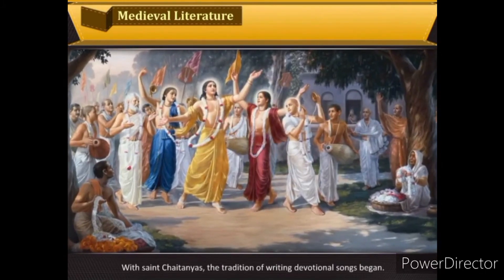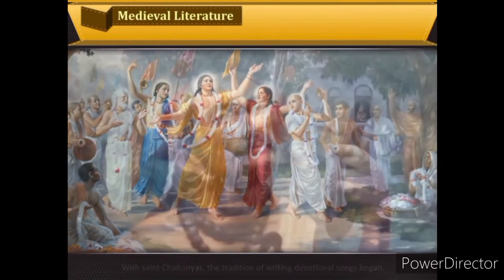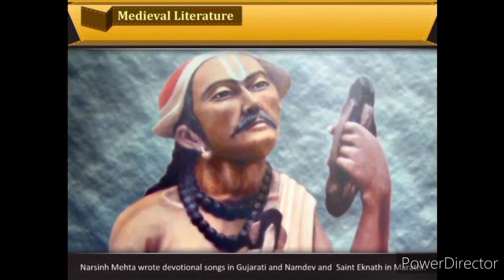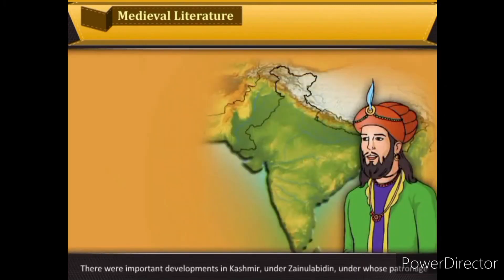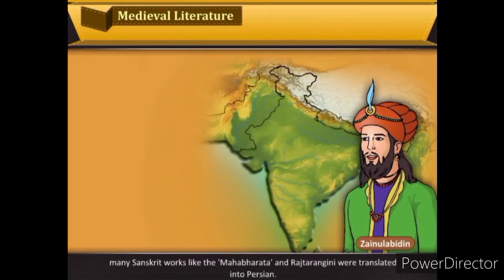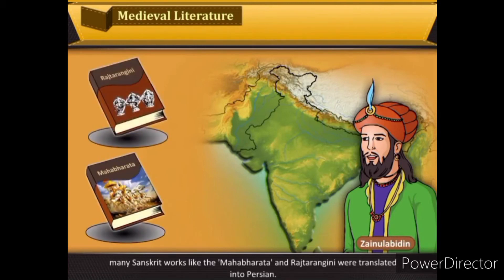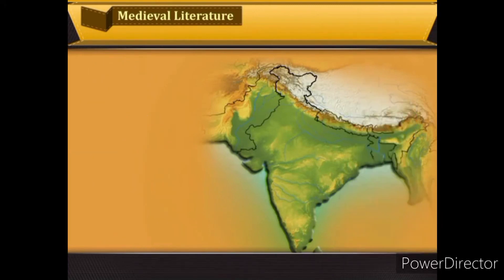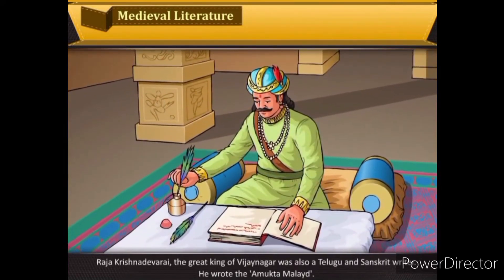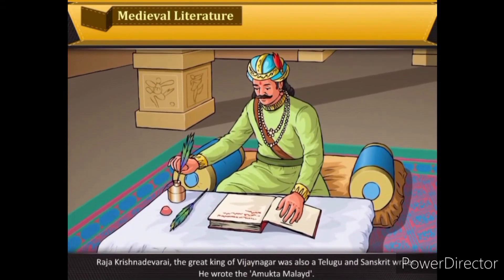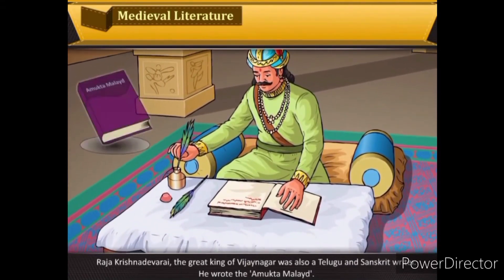With Saint Chaitanya, the tradition of writing devotional songs began. Narsinh Mehta wrote devotional songs in Gujarati, and Namdev and Saint Eknath in Marathi. There were important developments in Kashmir under Zainul Abidin, under whose patronage many Sanskrit works like the Mahabharata and the Rajatarangini were translated into Persian. In the reign of the Vijayanagara kings, Sanskrit literature continued to develop, and this was also an important period for the growth of Telugu literature. Raja Krishnadevaraya, the great king of Vijayanagara, wrote the Amuktamalyada.